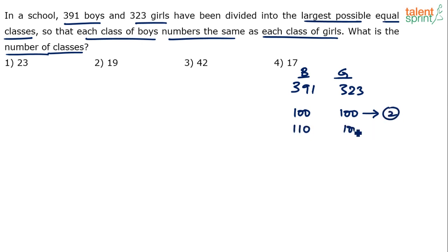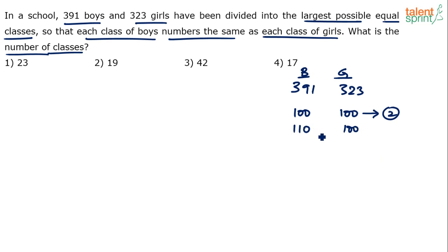Suppose there are 110 boys and 100 girls. The number of classes cannot be 2, because that would mean boys' class has 110 and girls' class has 100 — those are not equal. That condition is violated. So we cannot have 110 and 100 students respectively, and the number of classes cannot be 2. We need to divide them so the class size is as large as possible and boys per class equals girls per class.